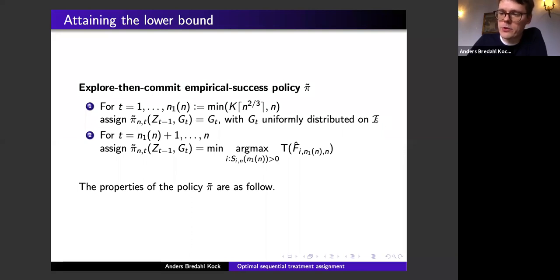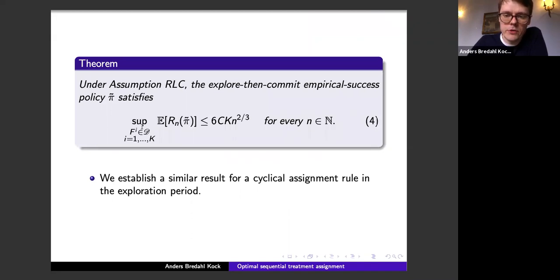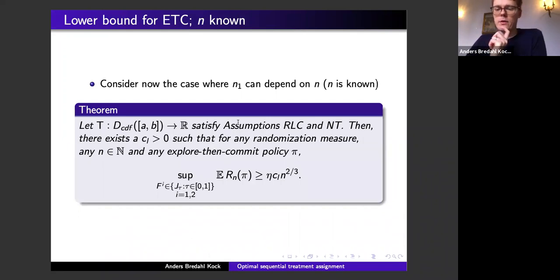In phase two, assign all remaining individuals to the treatment that maximizes T evaluated at the empirical CDF from the experiment. The worst-case performance of this two-phase policy increases at rate n^{2/3}, which we know is optimal within this class of two-phase policies, since no two-phase policy can do better than n^{2/3}.